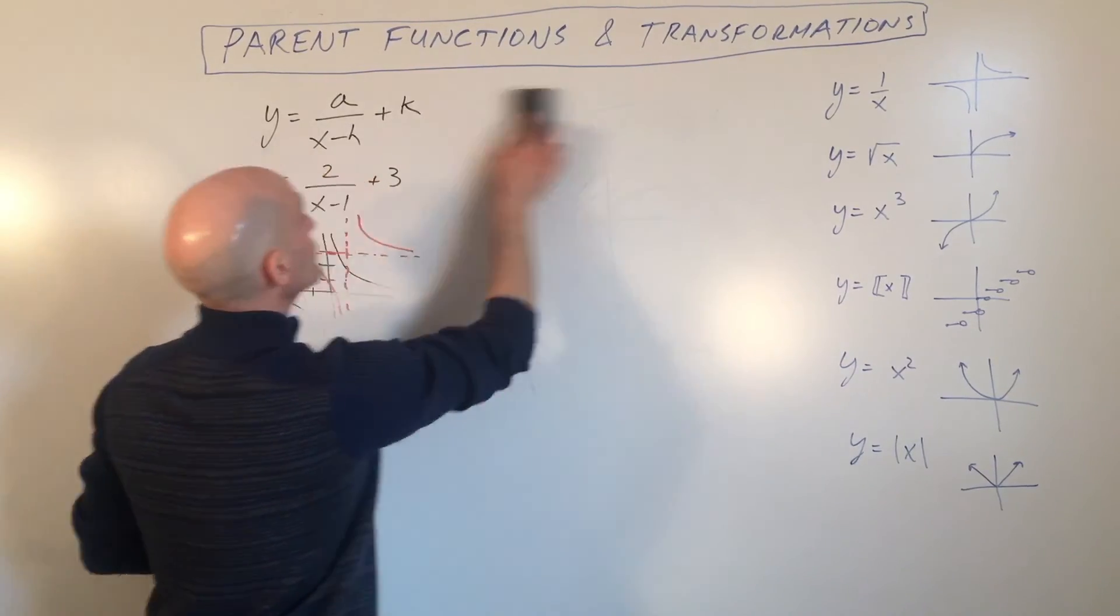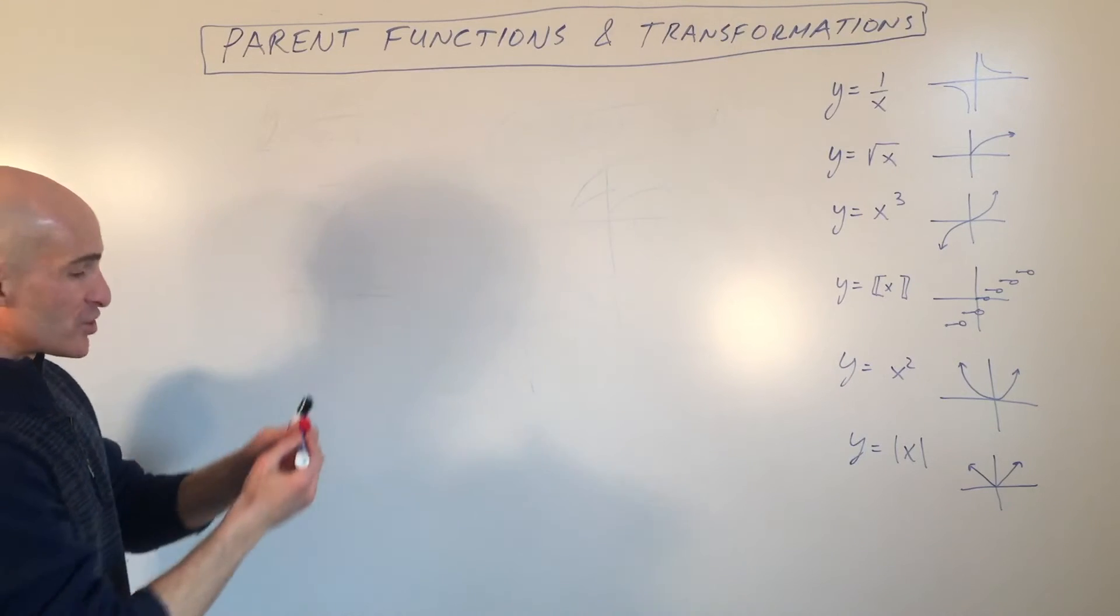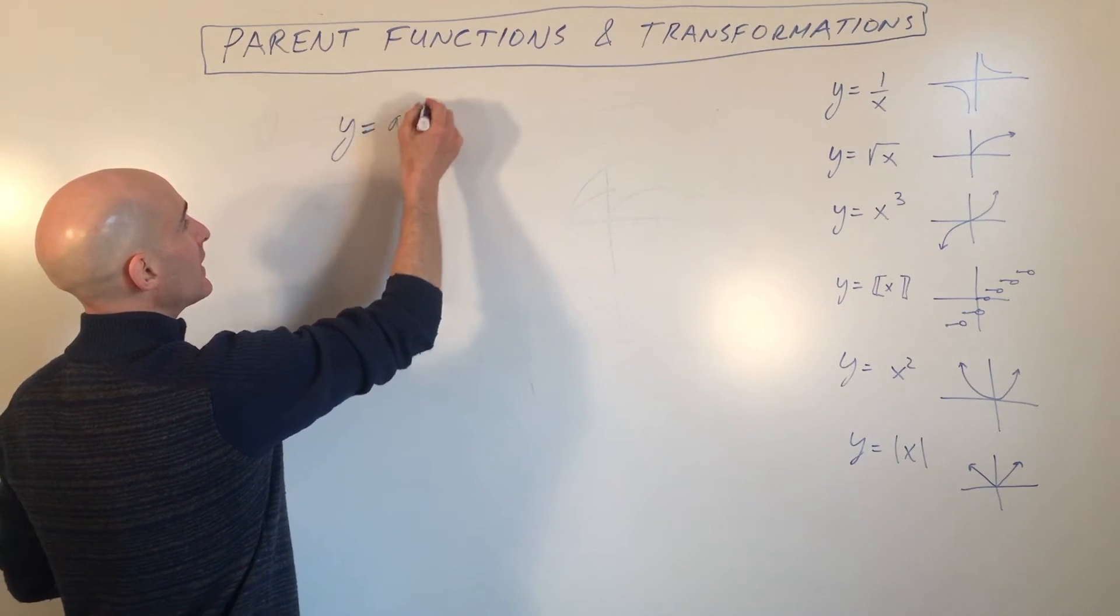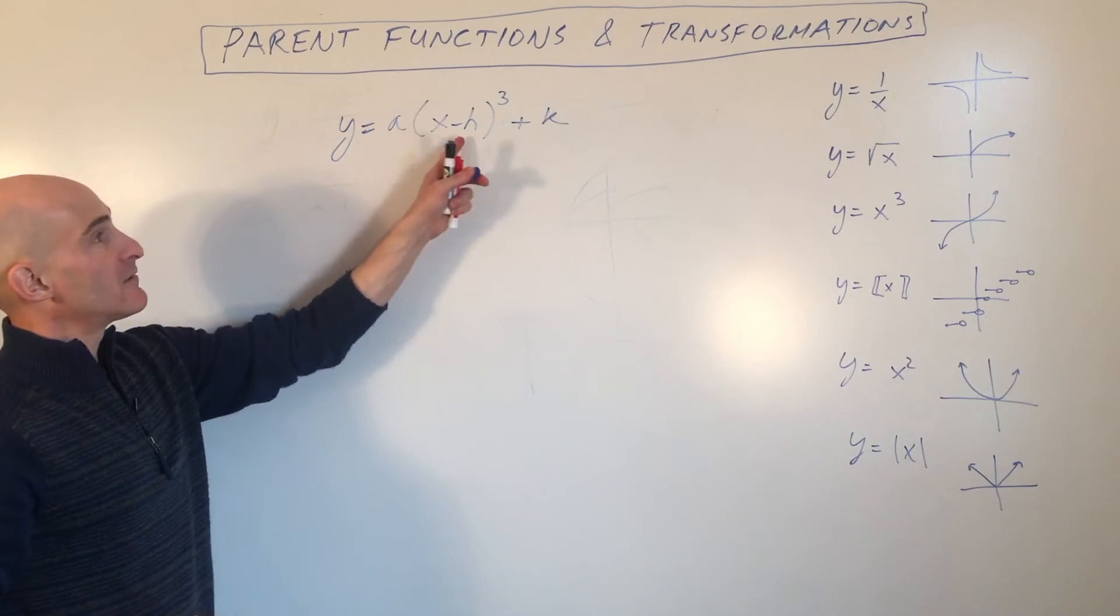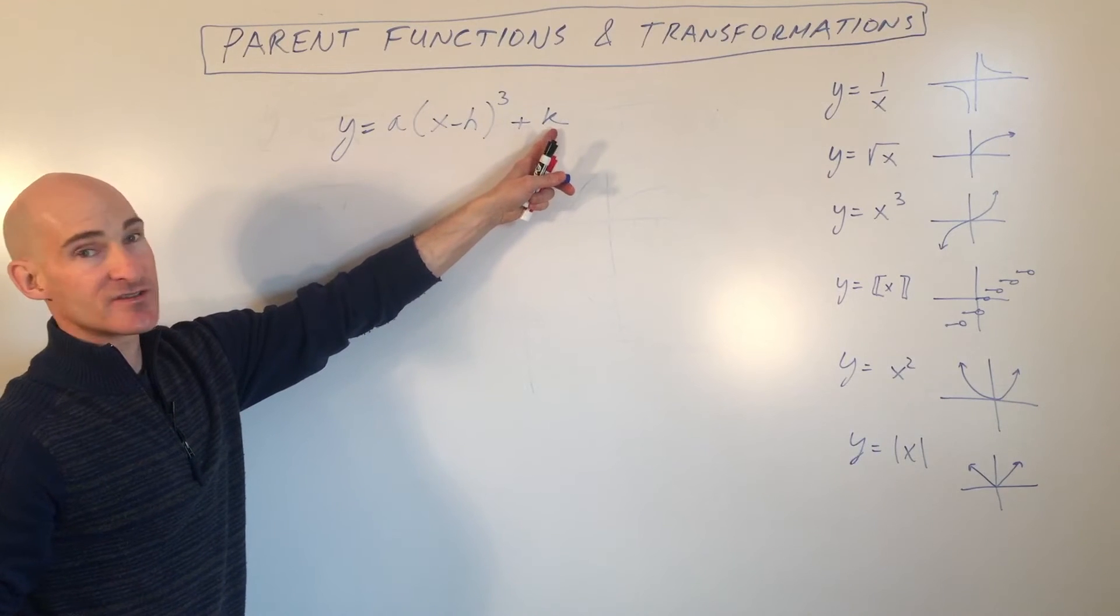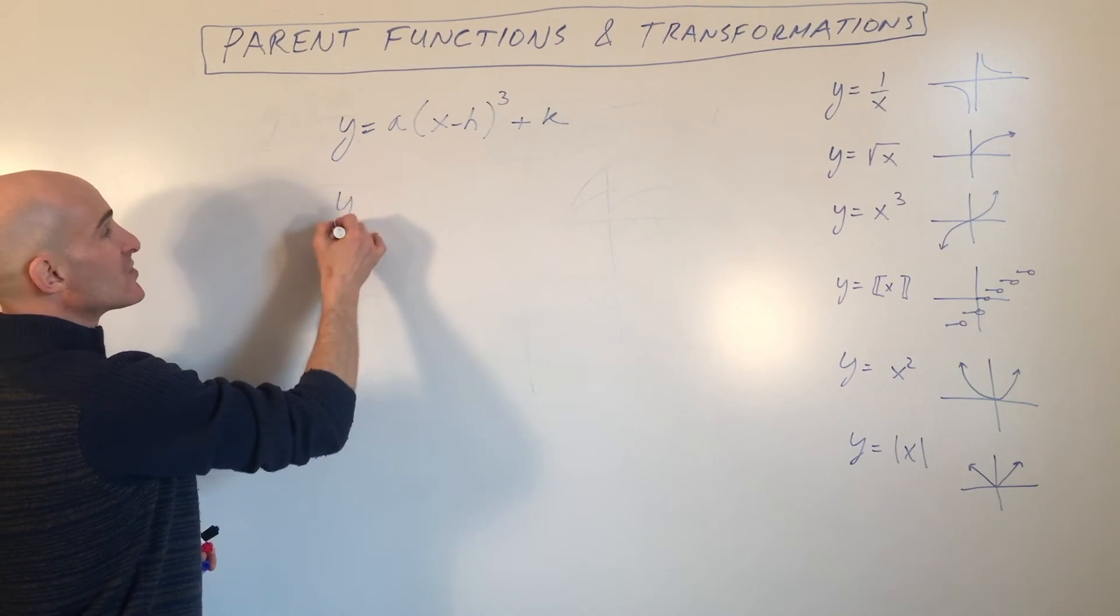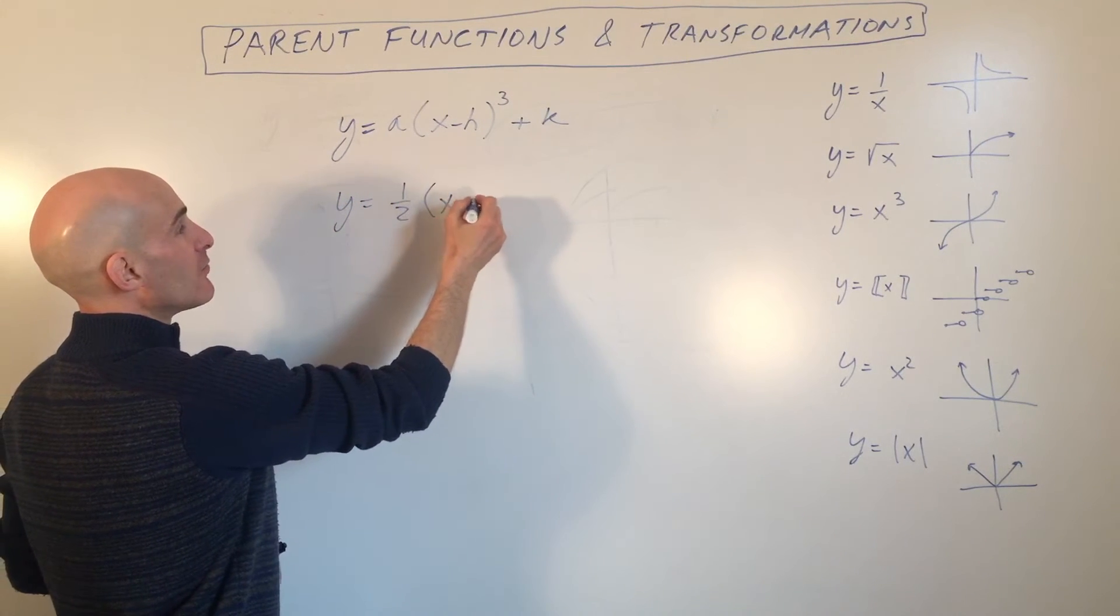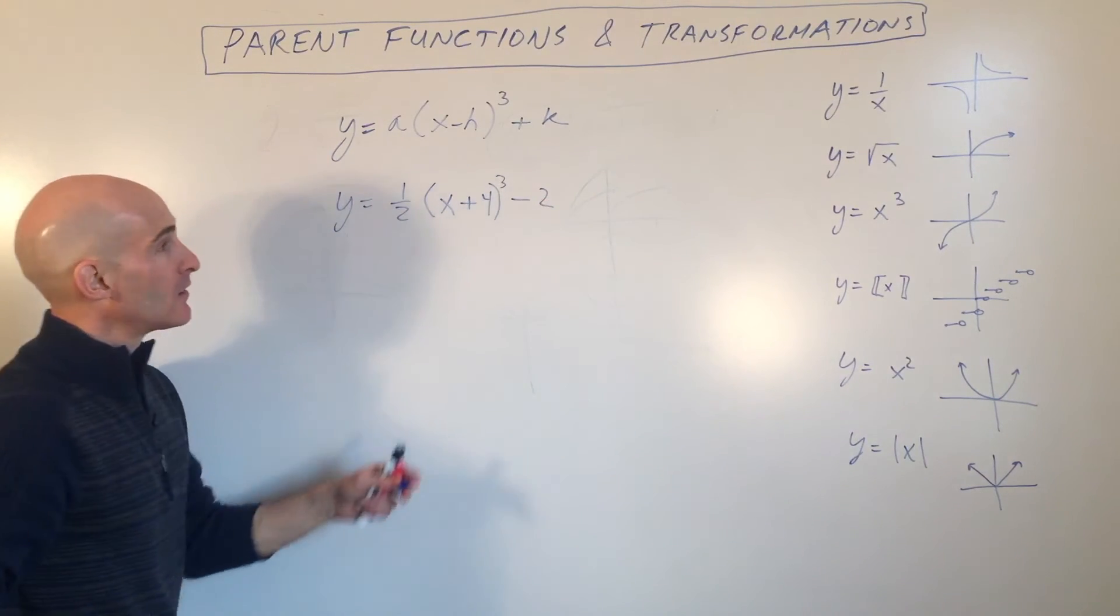So y equals x cubed. And again, we can think of this in a more general way, like y equals a times x minus h cubed plus k. The h shifts it left and right. The k shifts it up and down. And the a stretches it or compresses it. So let's just do this one: y equals 1 half x plus 4 cubed minus 2.